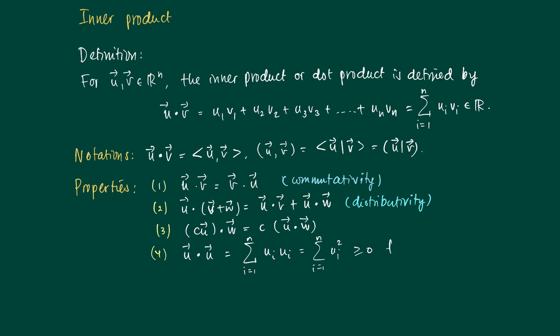And you see that it is at least zero for all u, and it can only be zero if all squares are zero, or in fact we are dealing with the zero vector. So this is just a result from property 4.